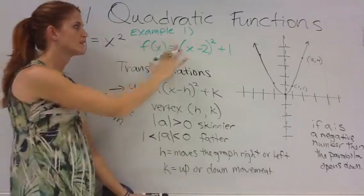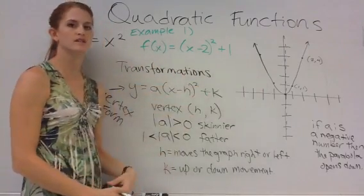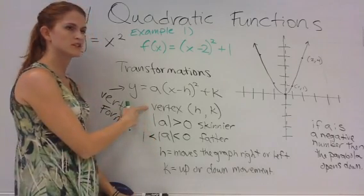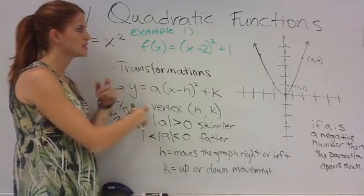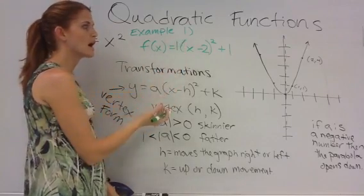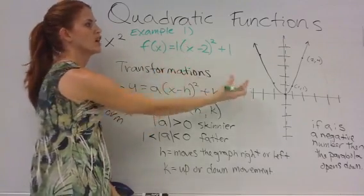We are going to graph this transformation. So when we have this example here, we want to see what it looks like compared to this one. Well, first we know that we need to find our vertex. For this example, because the a value that is right there is a one and it's positive, we know that this is going to open up.